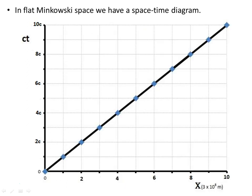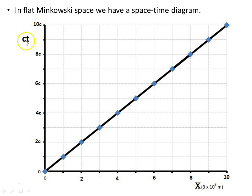In flat Minkowski space we have the following spacetime diagram with the x-axis and the time axis; the y and z axes are suppressed. The time axis has been rescaled into units of CT, c being the speed of light — 3×10⁸ metres per second — times time, which gives us a unit of distance. So 1 CT is equal to 3×10⁸ metres.